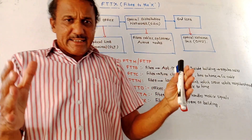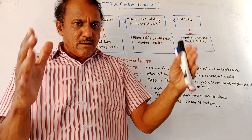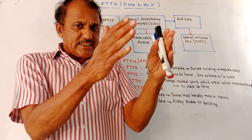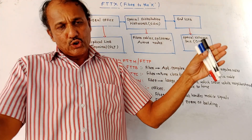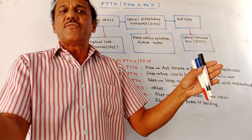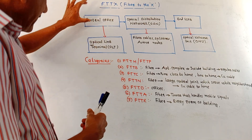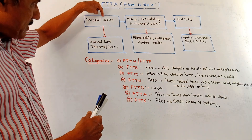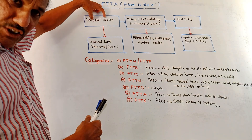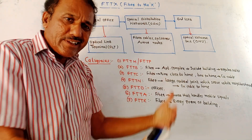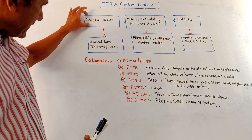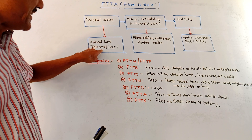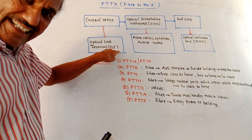Think of it like a main road that is divided into smaller roads to connect different places. The FTTX network consists of the central office, which is the major part and coordinates all things.